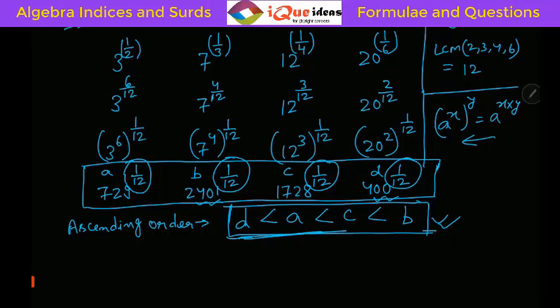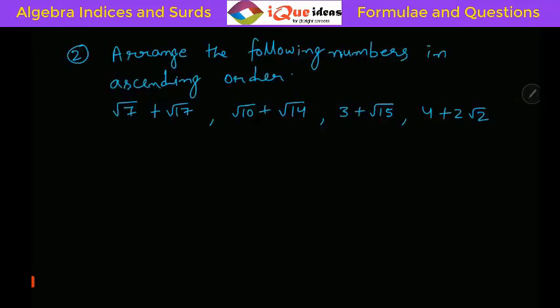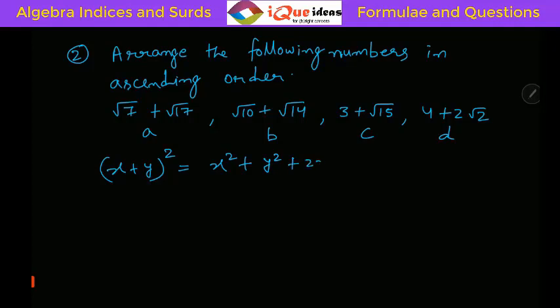Let us take one more question on comparison of surds. Arrange the following numbers in ascending order: A = √7 + √17, B = √10 + √14, C = 3 + √15, and D = 4 + 2√2. We will use the formula (x + y)² = x² + y² + 2xy. What we will do is square all of these numbers.